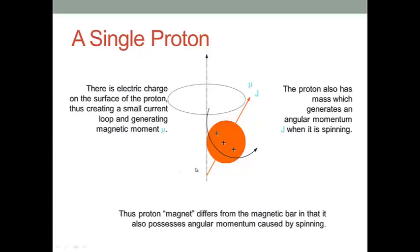Here you guys see I just show a single proton. As I just talked about, a single proton has charge on its surface. Then it creates a small current loop. A small current loop can generate magnetic moment μ. That's the physical principle. You can use the right-hand rule to find the direction of μ.